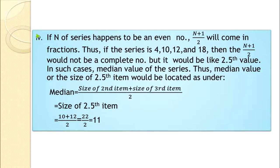But what happens when the number of observations is even? In such a case, we compute the (n+1)/2 th item — suppose it gives us 2.5th item. To find the median value, we write down the value of the second item, add the value of the third item, and divide by 2. For example, the size of 2.5th item = (value of 2nd item + value of 3rd item) / 2 = (10+12)/2 = 22/2 = 11. Hence we have computed the median.